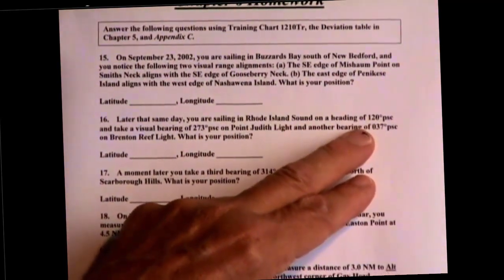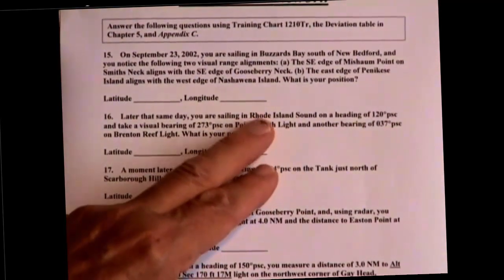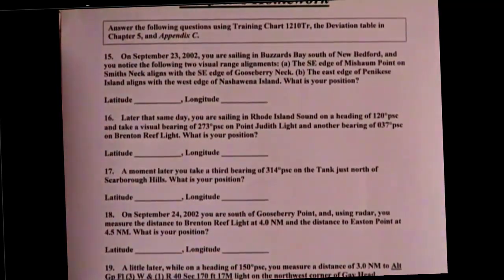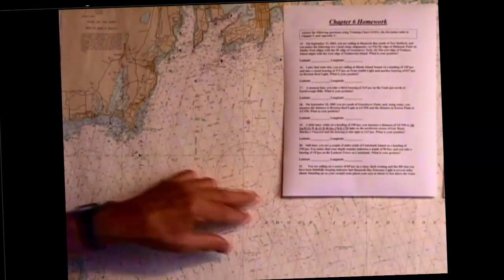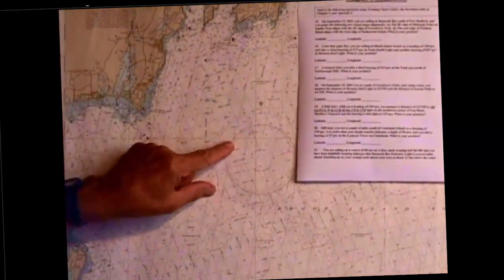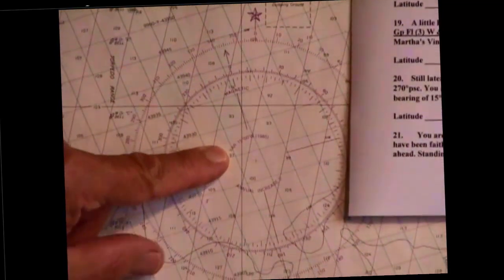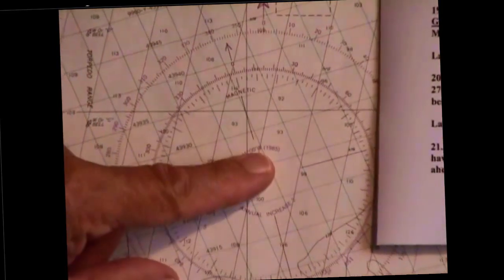One of the first things we'll have to do is convert these to true so we can plot in true. For this chart, let's go back to the compass rose and look at what we have in terms of variation. On the compass rose, here's the magnetic rose — the inner rose — and you see variation is 15 degrees, 00 minutes west, 1985.